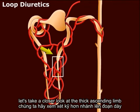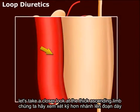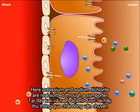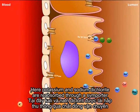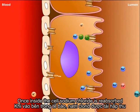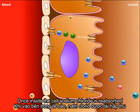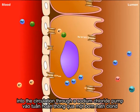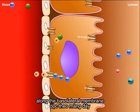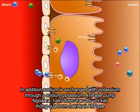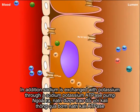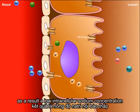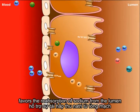Let's take a closer look at the thick ascending limb. Here, potassium and sodium dichloride are reabsorbed through a symport. Once inside the cell, sodium chloride is reabsorbed into the circulation through a sodium chloride pump along the basolateral membrane. In addition, sodium is exchanged with potassium through a sodium-potassium ATPase pump. As a result, a low intracellular sodium concentration favors the reabsorption of sodium from the lumen.